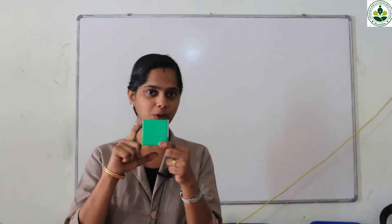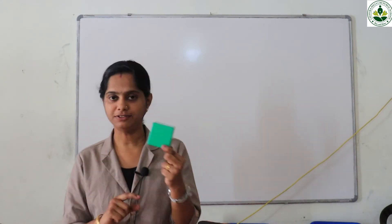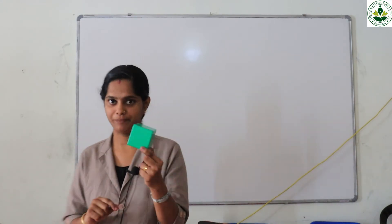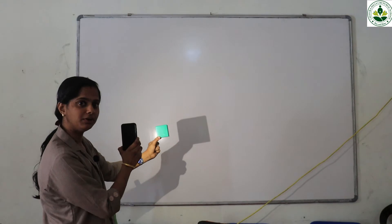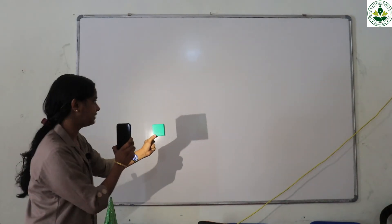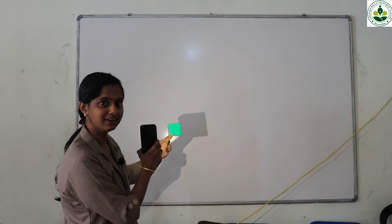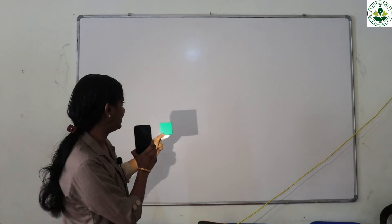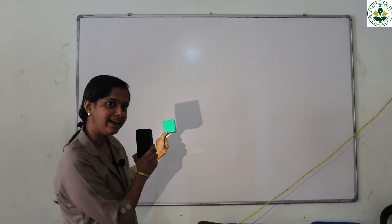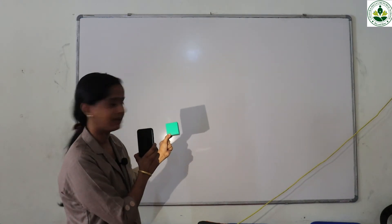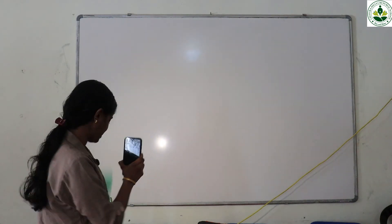This is a cube. We can check the shadow of this cube. Can you see the shadow? Students, tell me which shape do you see. Yes, it looks like a square.